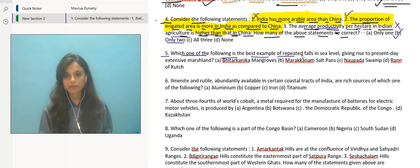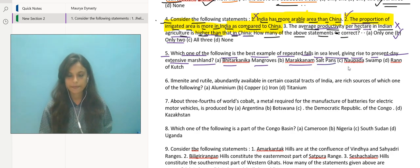Now let's move over to the next question. Which one of the following is the best example of repeated falls in sea level giving rise to present-day extensive marshland? Let's read the options: Bhitarkanika mangroves, Marakkanam salt pans, Naupada swamp, Rann of Kutch.